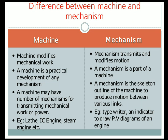A machine may have a number of mechanisms for transmitting mechanical work or power. It is manufactured for transmitting mechanical work — to do useful work or energy transfer. Examples include the lathe machine, IC engine, steam engine, etc.